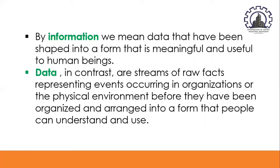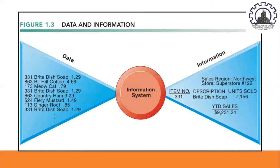To better understand the difference between information and data, consider this example: supermarket checkout counters scan millions of pieces of data from barcodes which describe each product. Such pieces of data can be totaled and analyzed to provide meaningful information such as the total number of bottles of dish detergent sold at a particular store, which brands were selling the most rapidly, or the total amount spent on a brand of dish detergent at a store or sales region, as shown in figure 1.3.